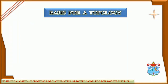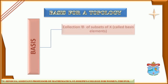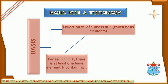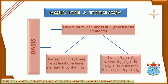Next, basis for a topology. This is a collection, say B, of subsets of X that should satisfy the following two conditions. The first condition is: for each element x in X, there is at least one basis element B that contains x. The second condition is: if there is an element x in the intersection of two basis elements, say B1 and B2, then there should exist another basis element B3 in B such that x belongs to B3, which is contained in B1 intersection B2. These subsets are also called basis elements.